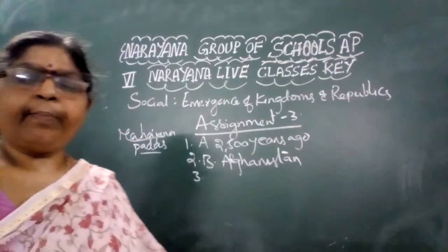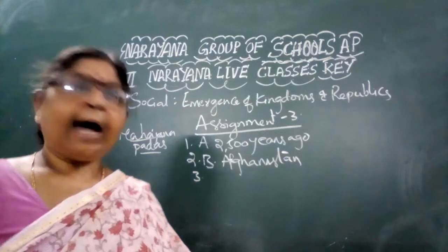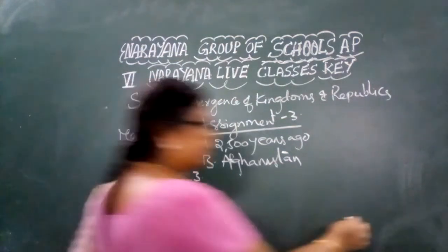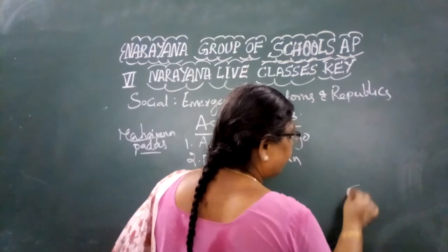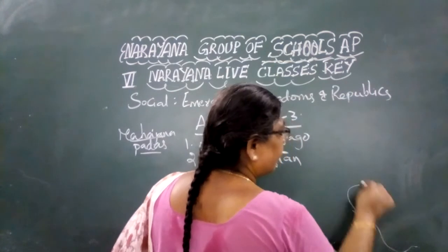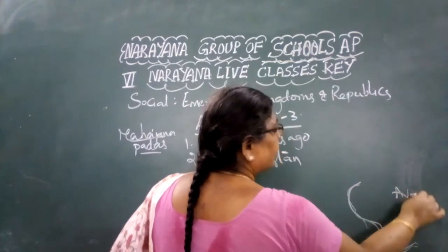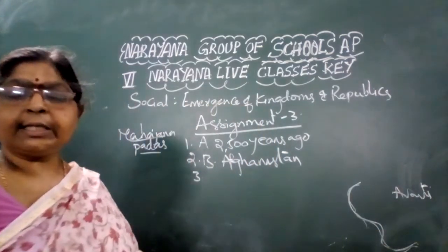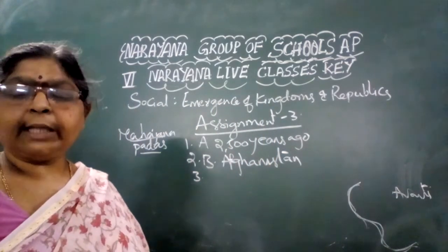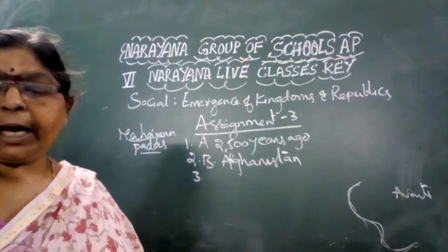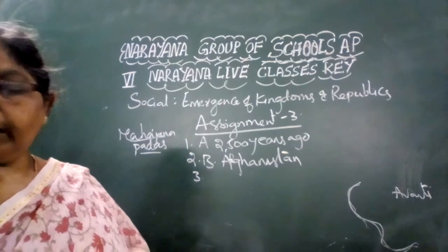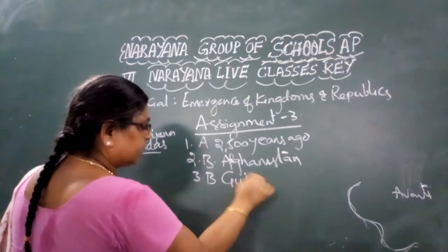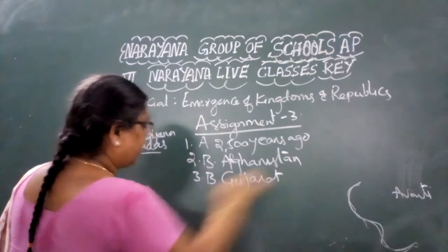Now, where is Avanti located? You can see very clearly that Avanti is located near the Gujarat region. At present, Avanti falls in the state of Gujarat. So Option B, Gujarat, is the right answer for Avanti.